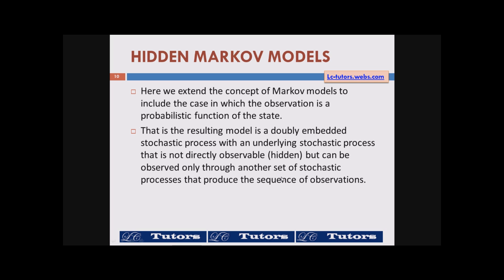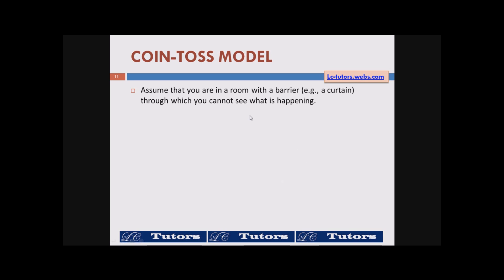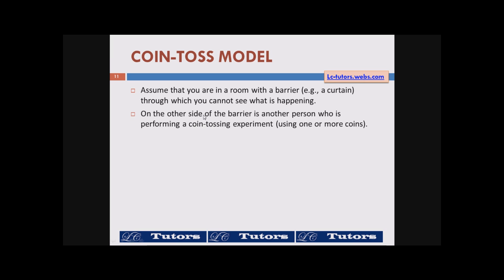Let's look at the theory of hidden Markov models and then redefine the coin toss model in a slightly different way. Assume that you are in a room with a barrier — a curtain through which you cannot see what is happening. On the other side of the barrier is a person who is performing a coin tossing experiment using one or more coins.